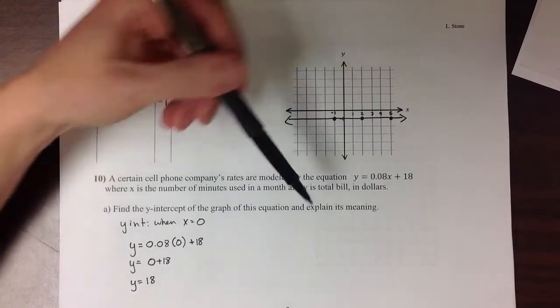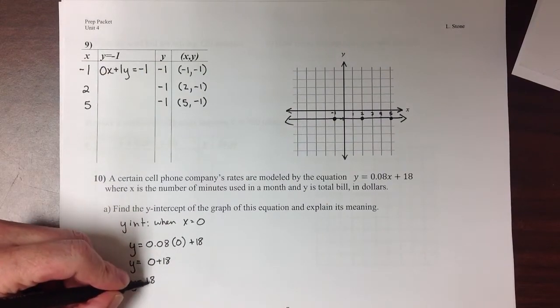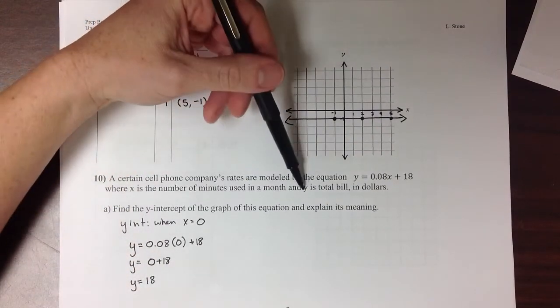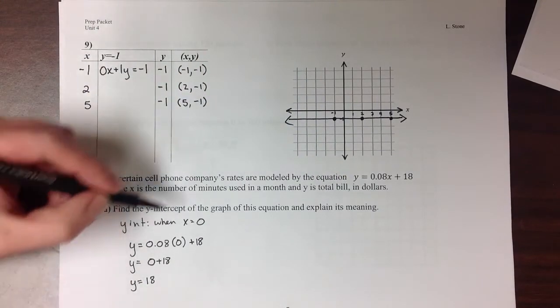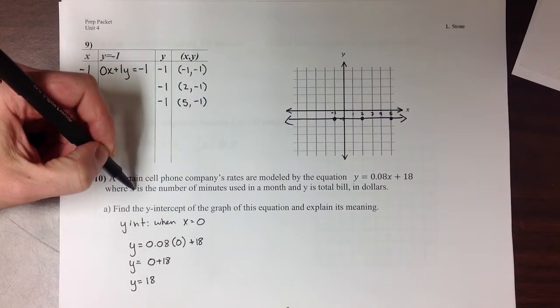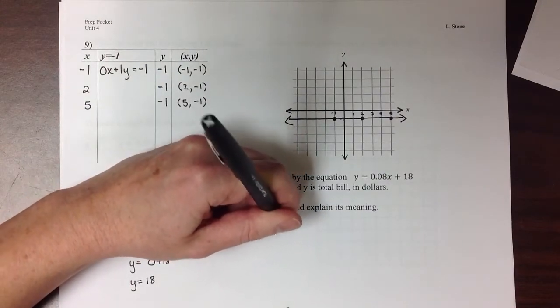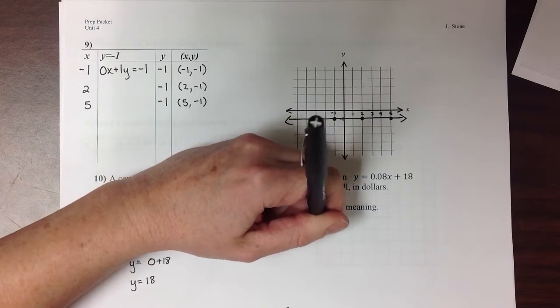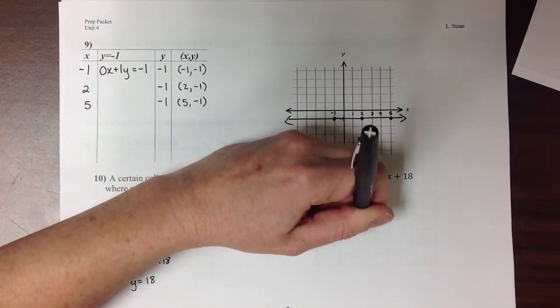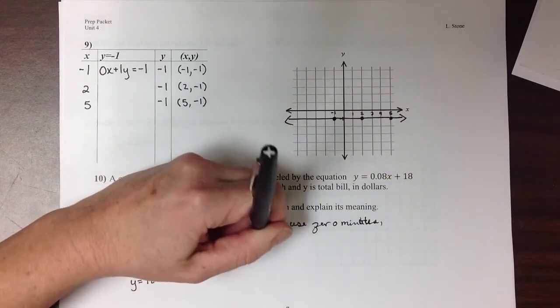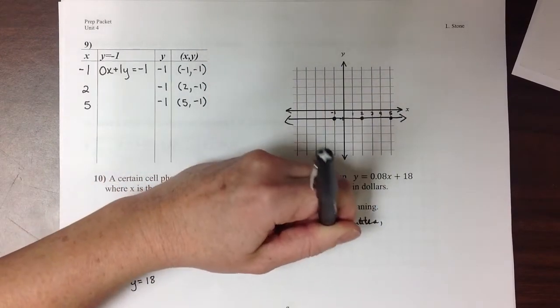The second thing that they ask us to do is explain what that means. So if y is equaling 18, and y is the total bill that you're paying in dollars, and x is the number of minutes that you talk, what the y-intercept means is that if you use 0 minutes, you don't talk on your phone at all for the whole month, you still have a bill. Your bill is $18.